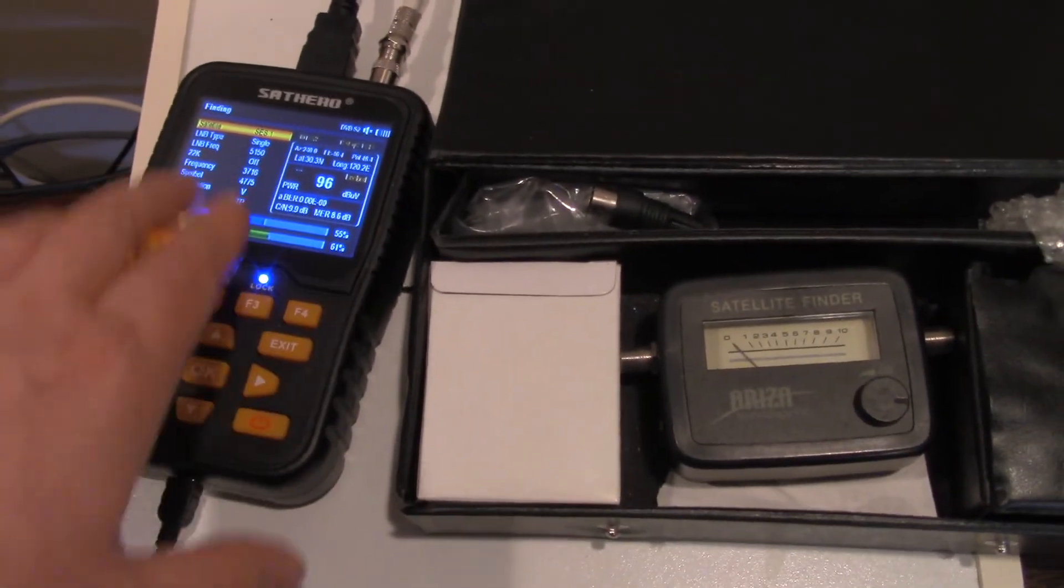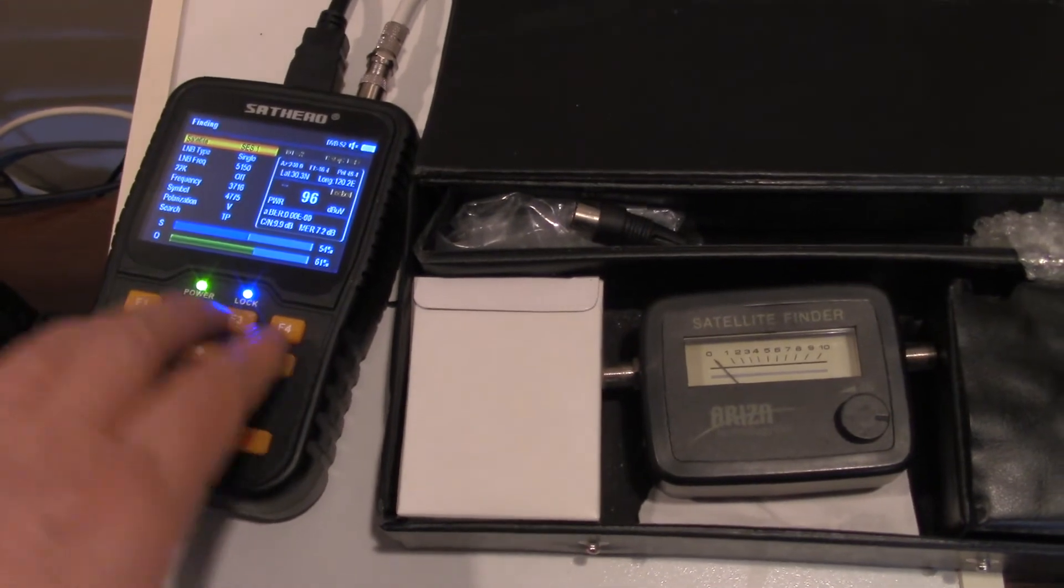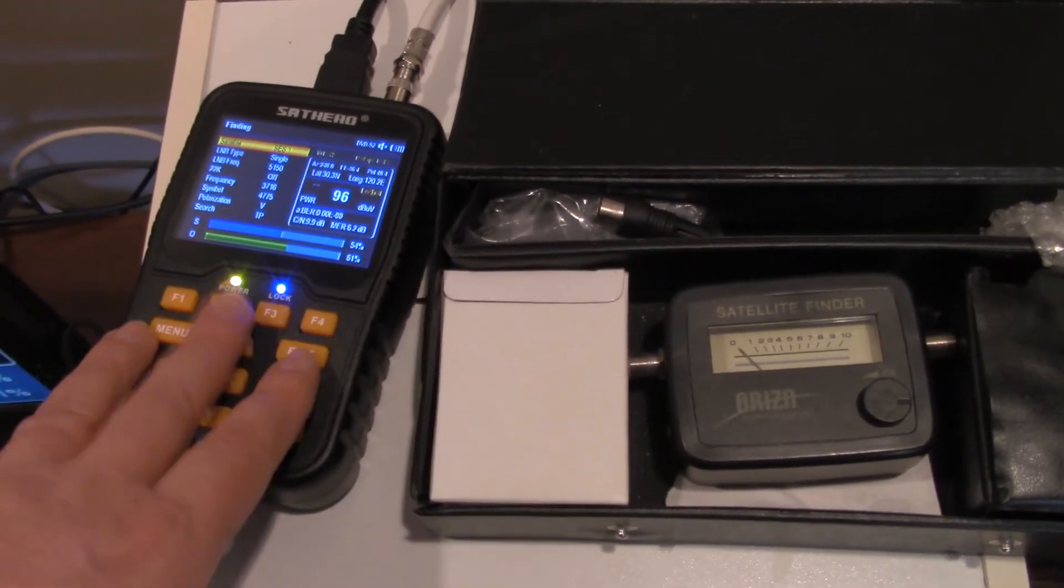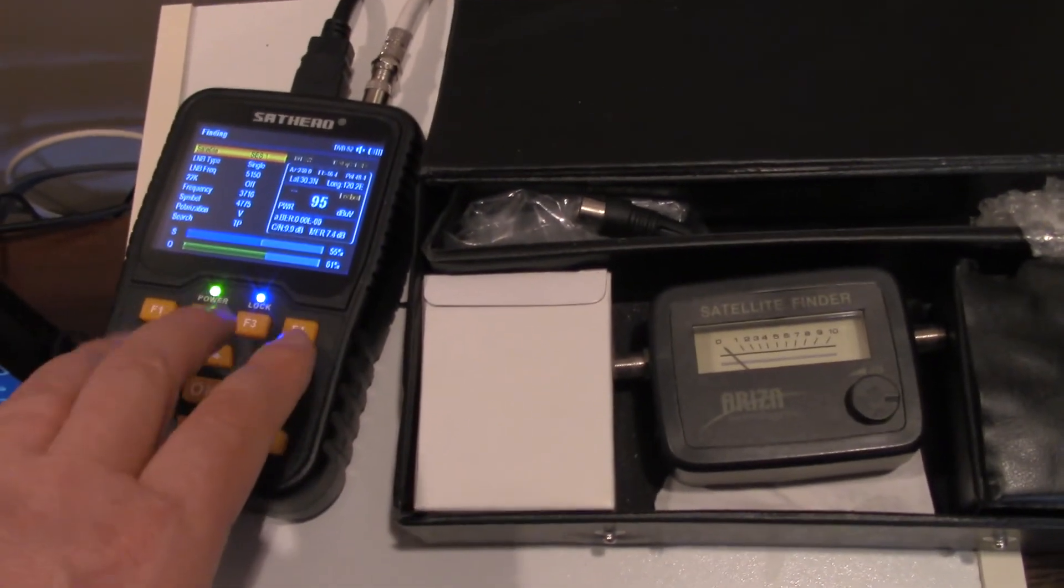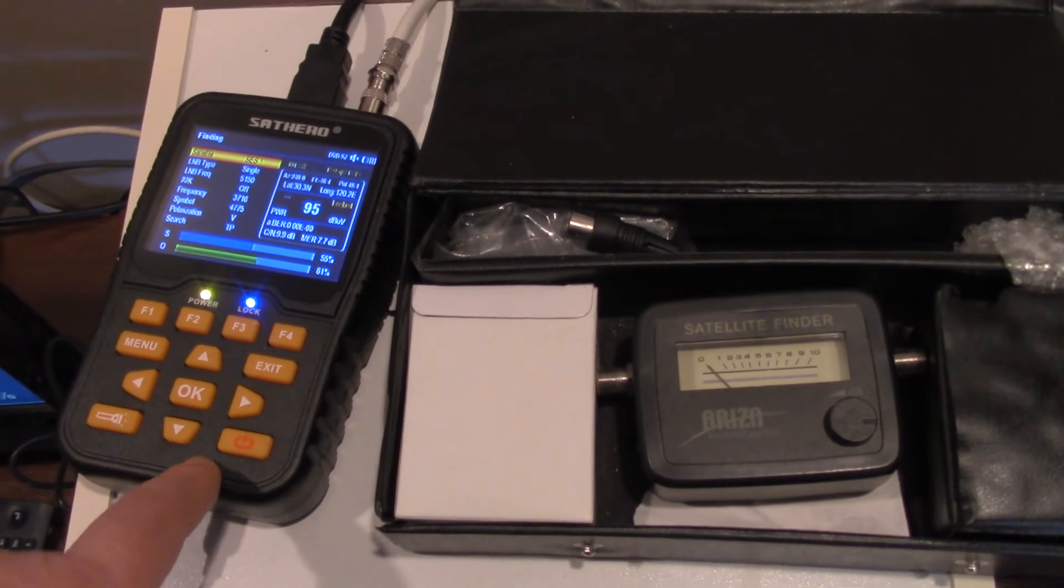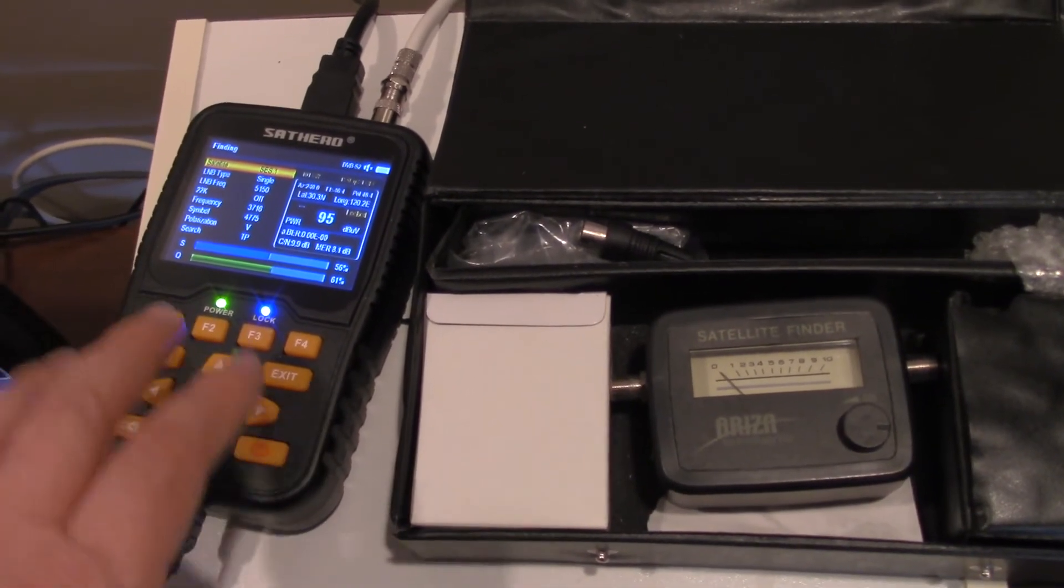When you do buy this, it will come with a lot of the transponders loaded on it. So you don't have to worry too much about that. But if there's this particular newer transponder you want to lock onto, you can go on Lyngsat and get the frequency, and you can probably find it that way.